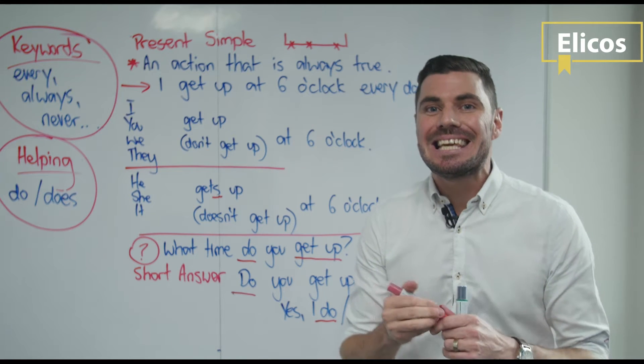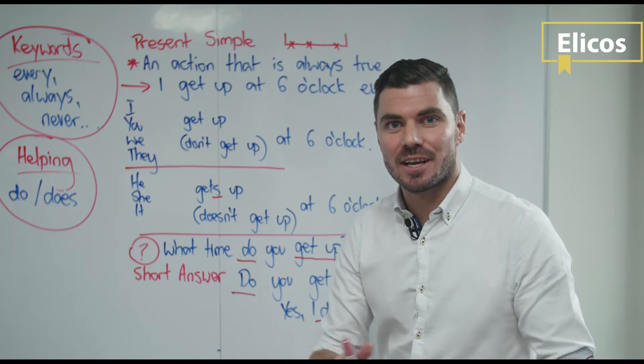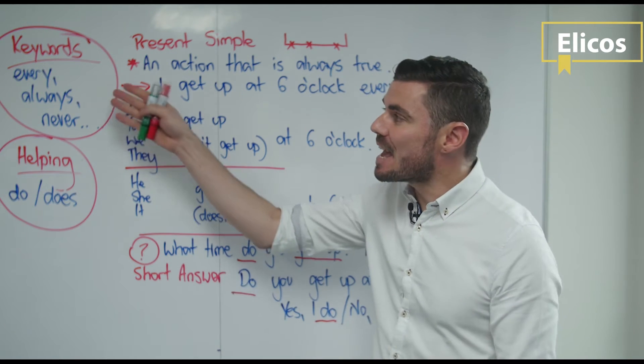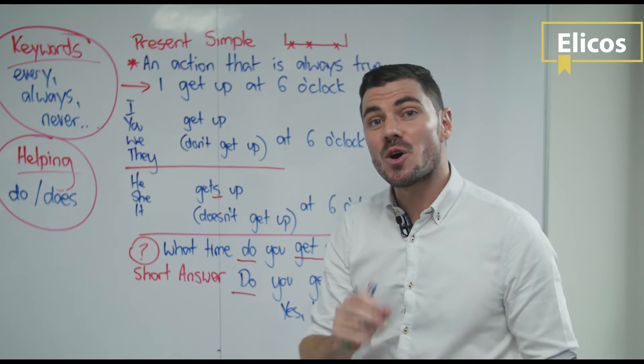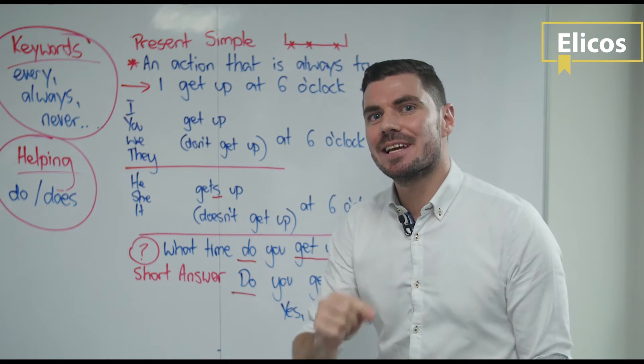And we have some keywords for the present simple. Those are words like every, always, never, sometimes, often. When you see these words, you know it's the present simple.